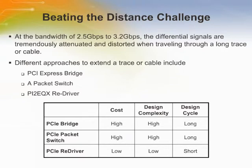High-speed differential signal interfaces dominate today's high-performance system architectures because of their ultra-high data rate throughput, low power consumption, facilitation of PCB layout, and PCB cost reduction. The challenge is that at bandwidths of 2.5 gigabits per second to 3.2 gigabits per second, the differential signals are tremendously attenuated and distorted when traveling through a long trace or cable.